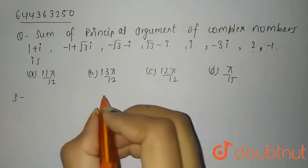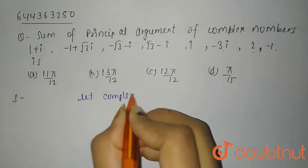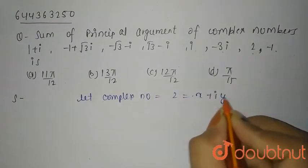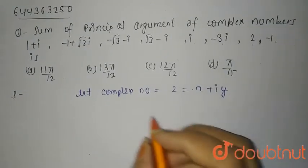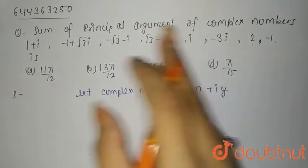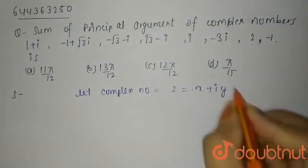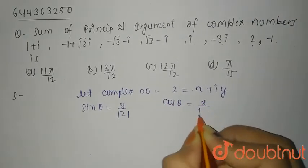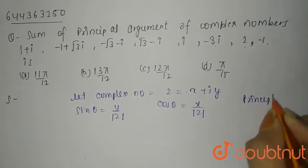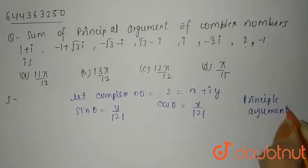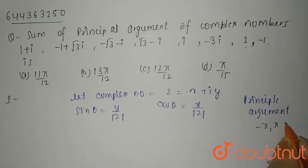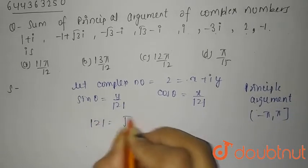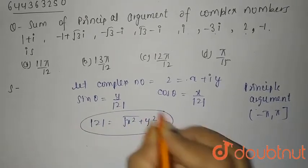Let a complex number z = x + iy. We need to find the sum of the principal arguments. We write sin θ = y / |z| and cos θ = x / |z|. The principal argument of any complex number lies between −π and π (where π is included). The modulus |z| = √(x² + y²).